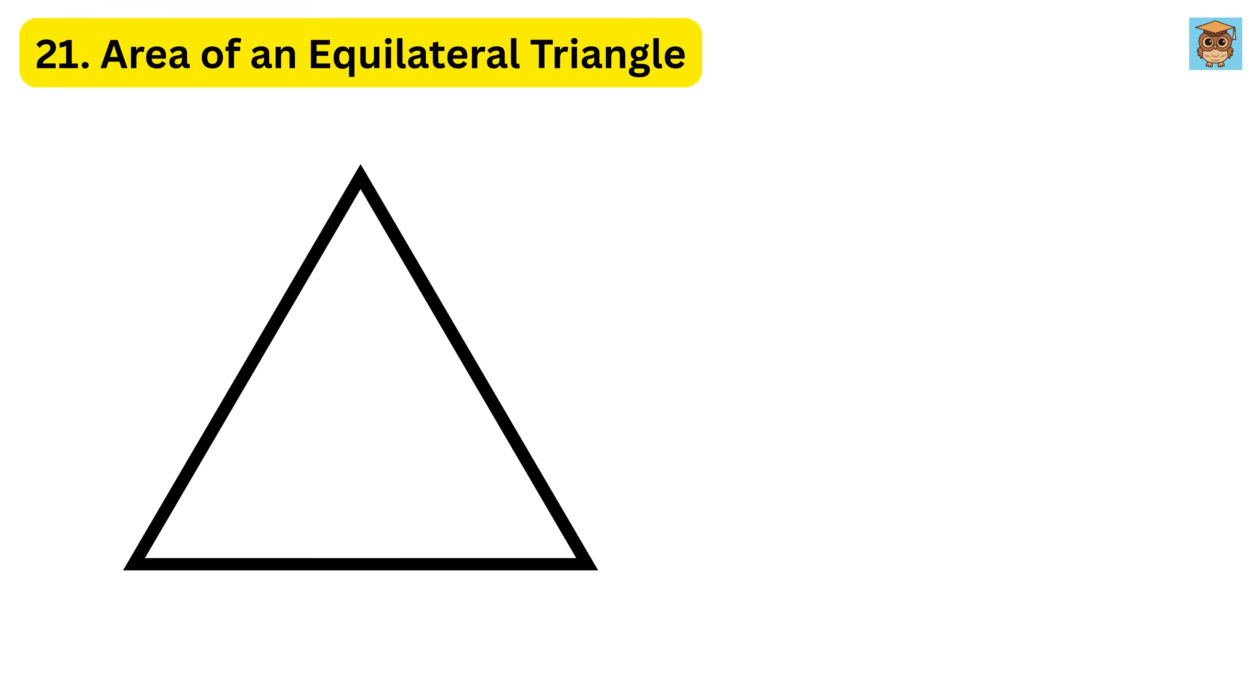21. Area of an Equilateral Triangle. For an Equilateral Triangle with Side Length S, the area is square root of 3 divided by 4 times S times S. This formula works only for equilateral triangles because of their perfect symmetry.